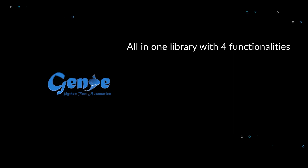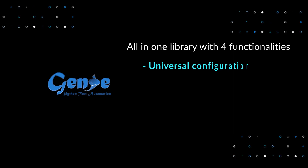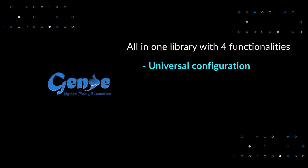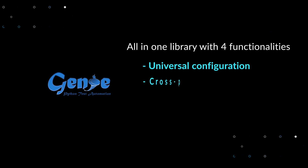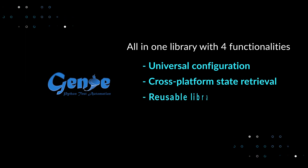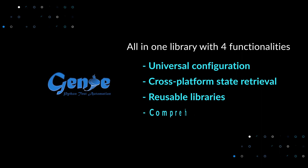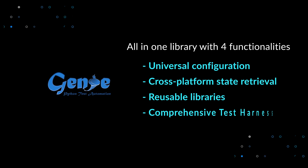Genie has four main functionalities. Firstly, it can configure devices without being specific to a particular OS. Using Genie, users can retrieve device operational state. It also has a pool of libraries to reuse which includes test cases. Lastly, test harness which ties it all together.